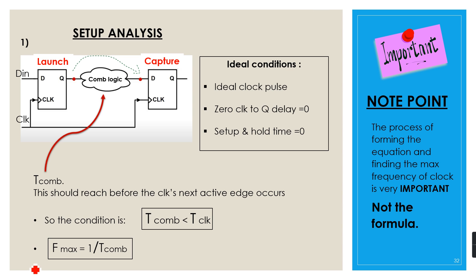Let us start with ideal conditions. First, an ideal clock pulse — meaning there should be no delay in the clock path, so the clock signal reaches all flip-flop inputs at the same time. Second, zero clock-to-Q delay — the flip-flop should produce output on the active clock edge without extra delay. Third, setup and hold times are assumed to be zero. The first flop is called the launch flop and the second is called the capture flop.